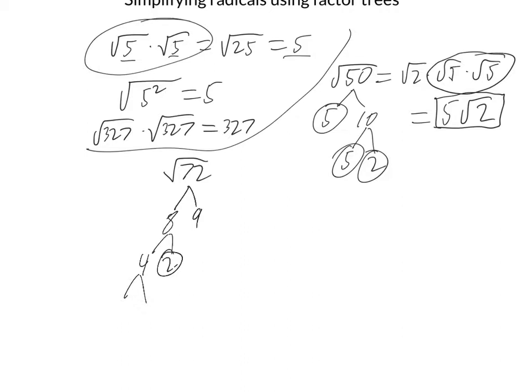And 2 is prime, so I circle it. And 4 is 2 times 2. Really important to circle those primes so you can keep track of the numbers that you're using. So what I just did there is I showed that the square root of 72 is just 2 times 2 times 2 times 3 times 3 is going to give me 72.